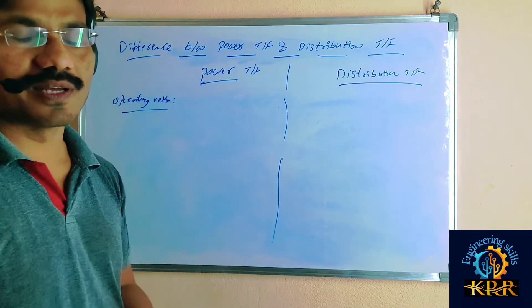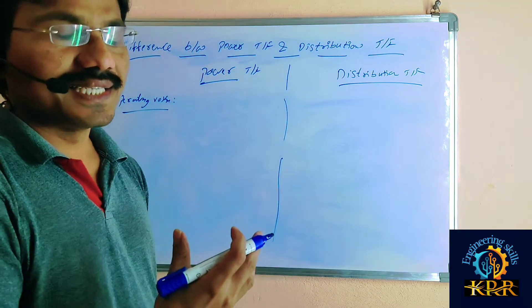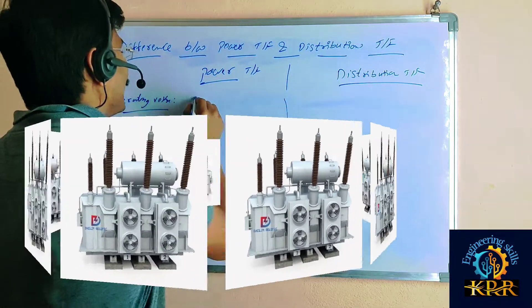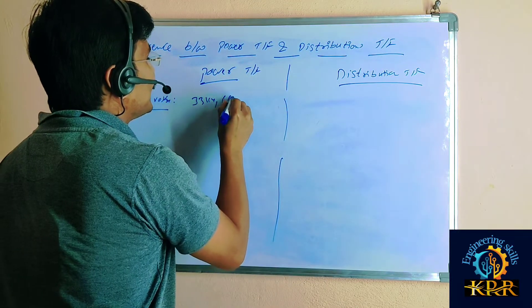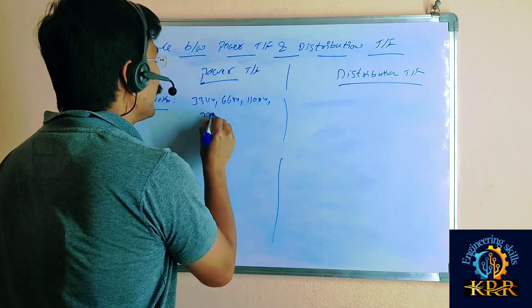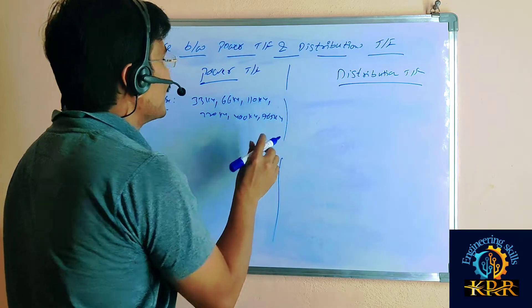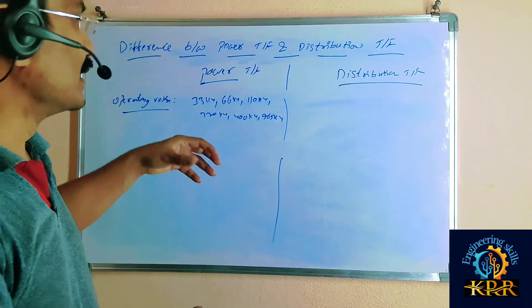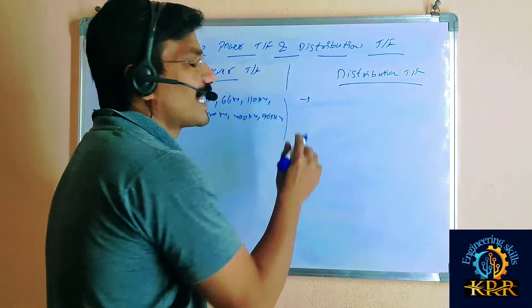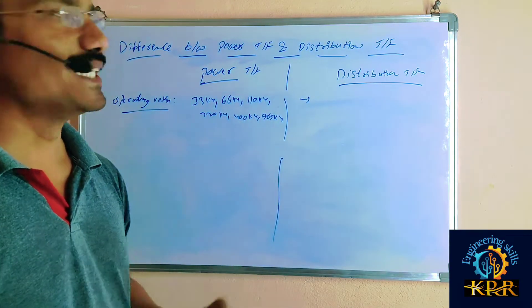The power transformer is used to operate at 33 kV and above. We are using a power transformer at 33 kV, 66 kV, 110 kV, 220 kV, 400 kV, and 765 kV. These are the operating voltage ranges where we use a power transformer.